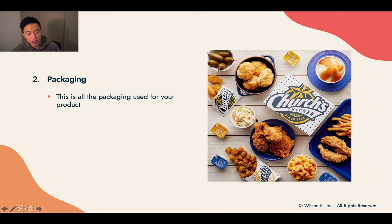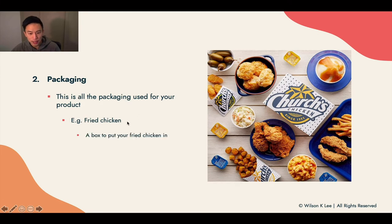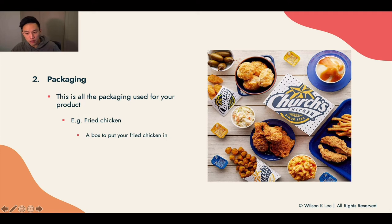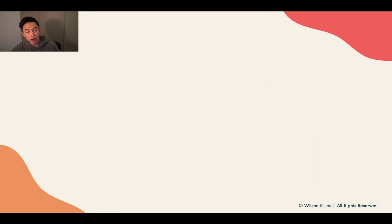Next up, packaging is also included in your cost of goods sold. This is the packaging used for your product. For the same fried chicken example, it's the box you're putting your fried chicken in. If you're selling coleslaw as well, the packaging for that too. A lot of people make the mistake of not including packaging in their cost of goods sold, but this is definitely an item you want to consider when calculating your COGS. From now on, I'm going to refer to cost of goods sold as COGS — that's the short form.